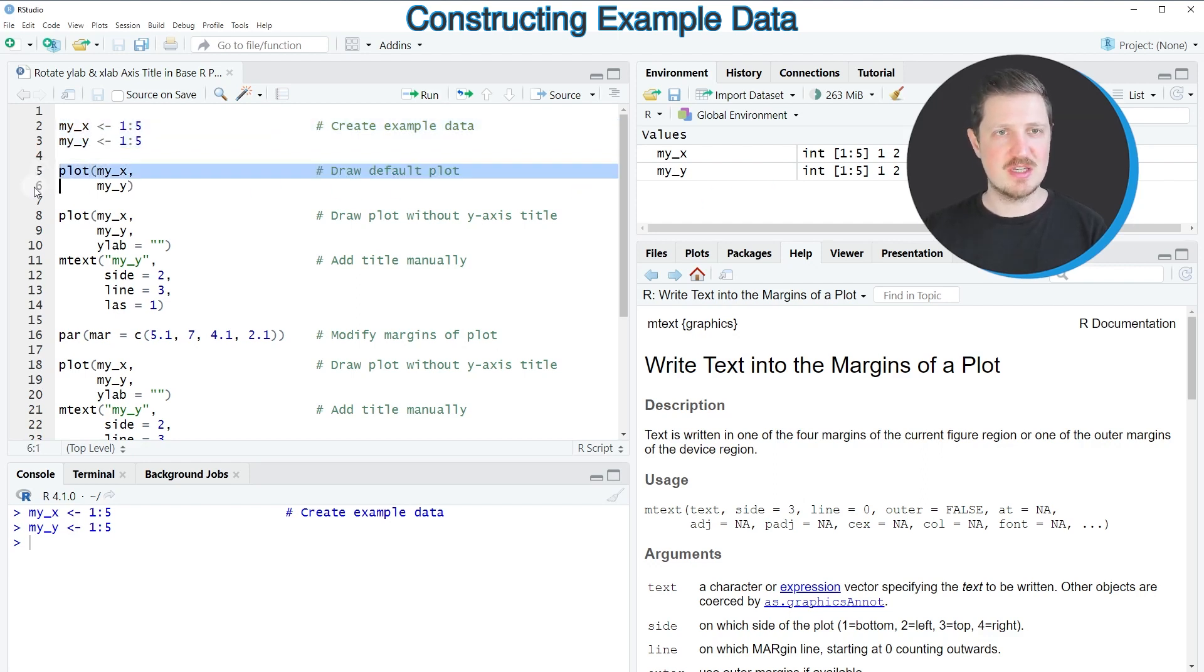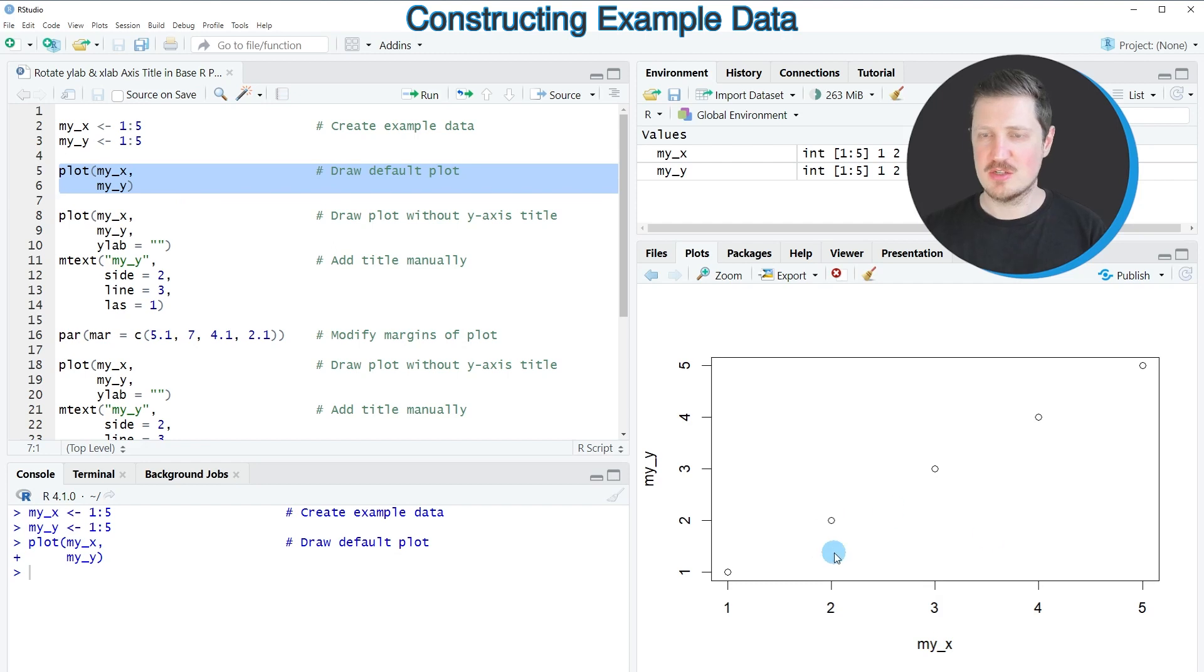Now if we want to draw these data in a plot, we can use the plot function as shown in lines 5 and 6. After running these lines, a new scatter plot is drawn showing our data points. The default axis labels are myx and myy, corresponding to the names of our vector objects.